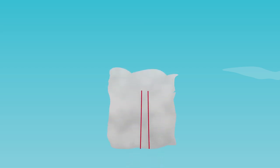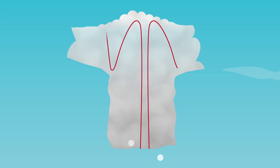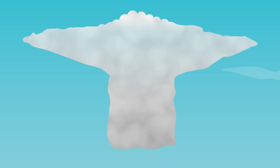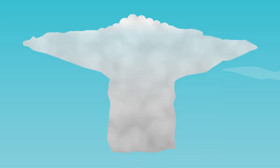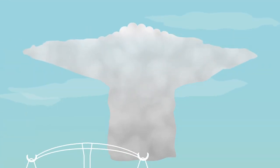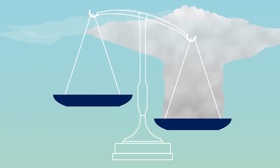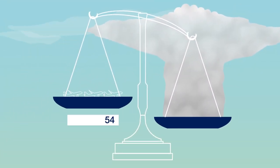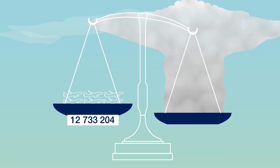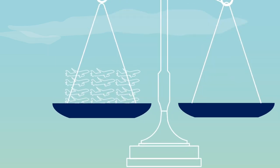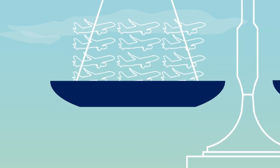In an unstable atmosphere, particles accelerate and may overshoot the tropopause. A large cumulonimbus under the tropics can weigh 1 billion tons — equivalent to 15 million Airbus A320s. The energy required to keep this gigantic mass in the air is colossal.